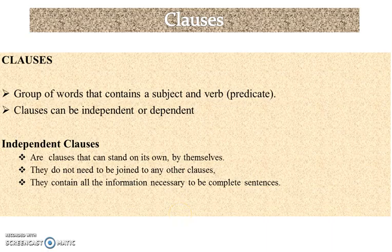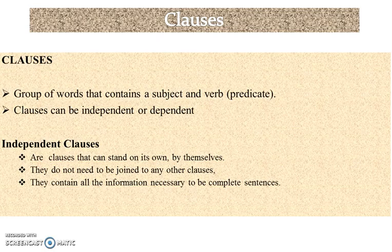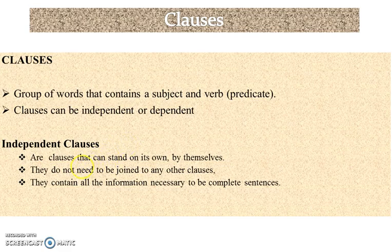Good morning everybody. I'm going to present you with some material referring to clauses, as well as some and any, and could and should. Let's start with clauses. What are clauses? Clauses are a group of words that contains a subject and a verb, which can be the predicate at the same time. Clauses can be independent and dependent. Let's start with independent clauses. Independent clauses are clauses that can stand on their own by themselves, meaning they have their own meaning and do not need to be joined to any other clause.